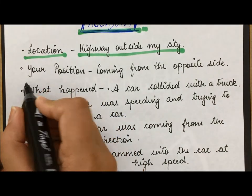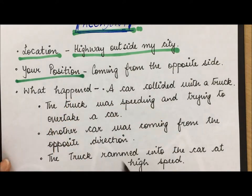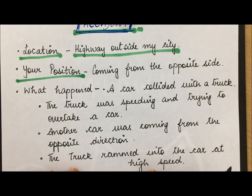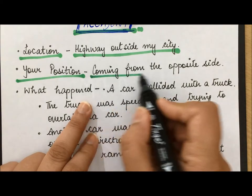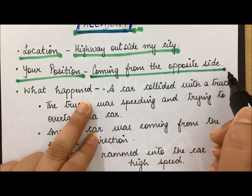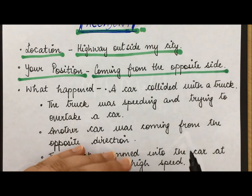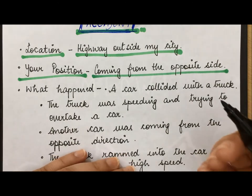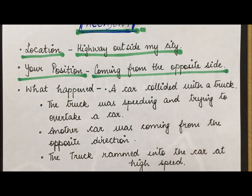The next question is about your position — where were you in relation to this accident? How did you see it? I was coming from the opposite direction, meaning I saw it happen right in front of my eyes. I was traveling in my car in the opposite direction.